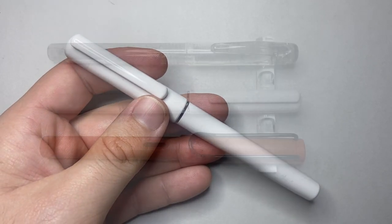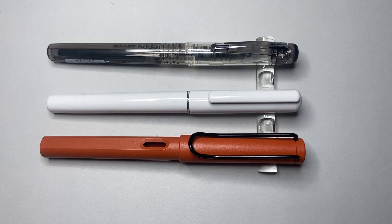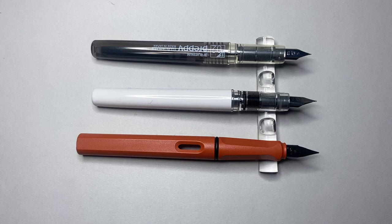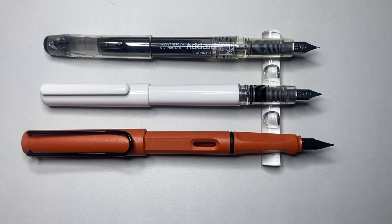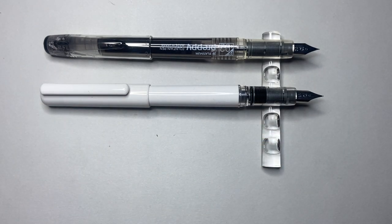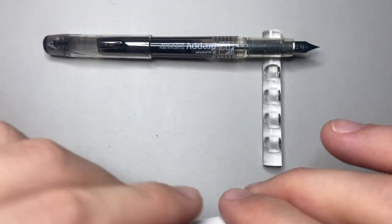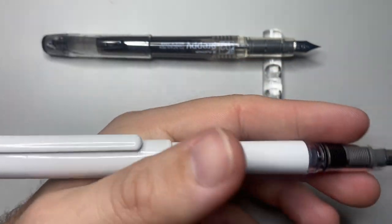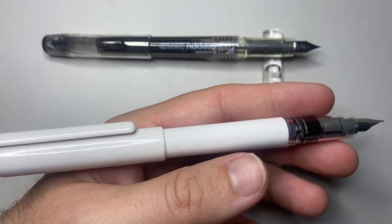Quick size comparison now with the Platinum Preppy and the Lamy Safari. It's a pretty decent size. It fits nicely in this same sort of family. Uncapped, more of the same, just a little bit smaller than the Lamy Safari there. Posted, it is visibly shorter than the Lamy Safari, but it is a very comfortable pen when this is posted. It fits beautifully in the hand, and like the Preppy, it's lightweight and it just is a nice simple easy pen to write with. Not fancy, but it is just nice.